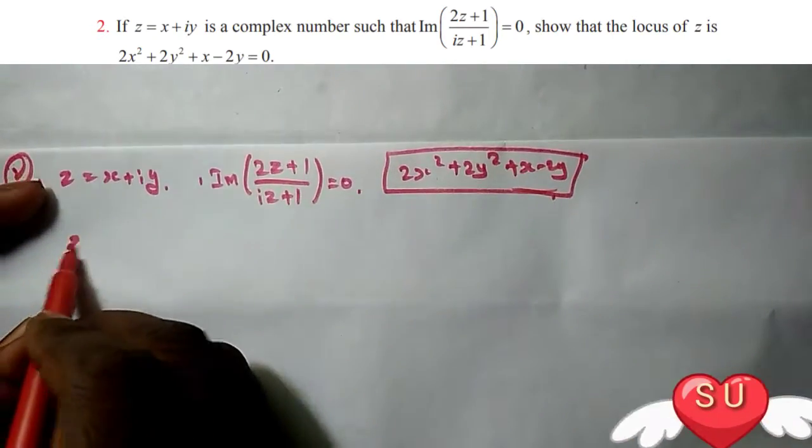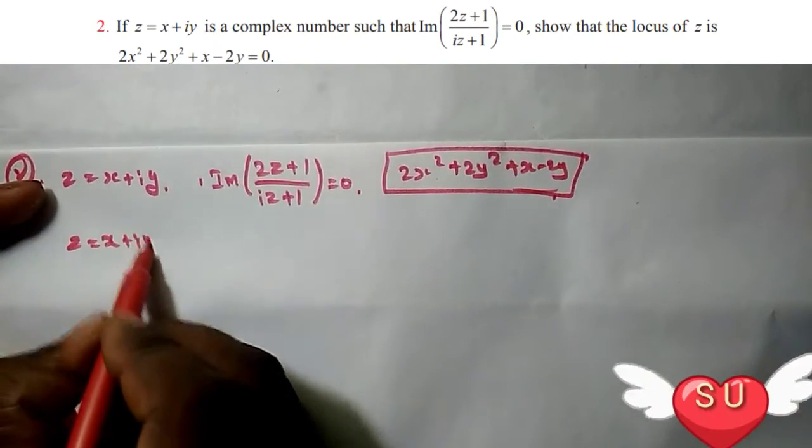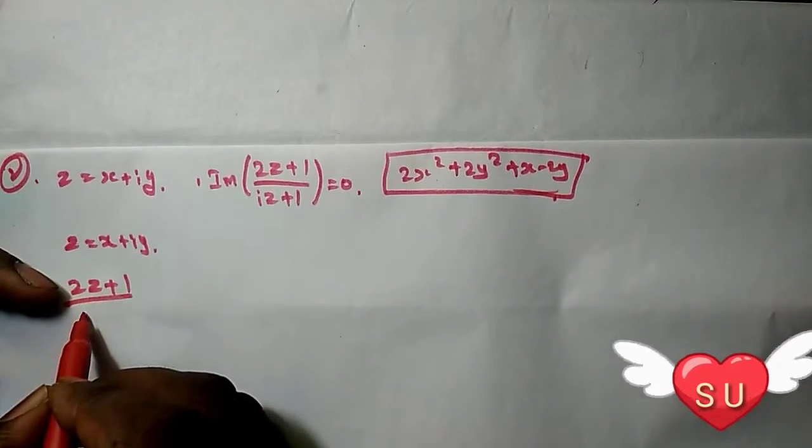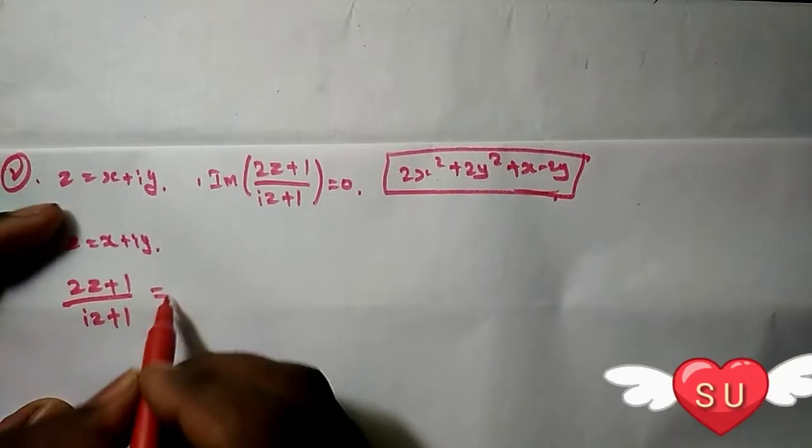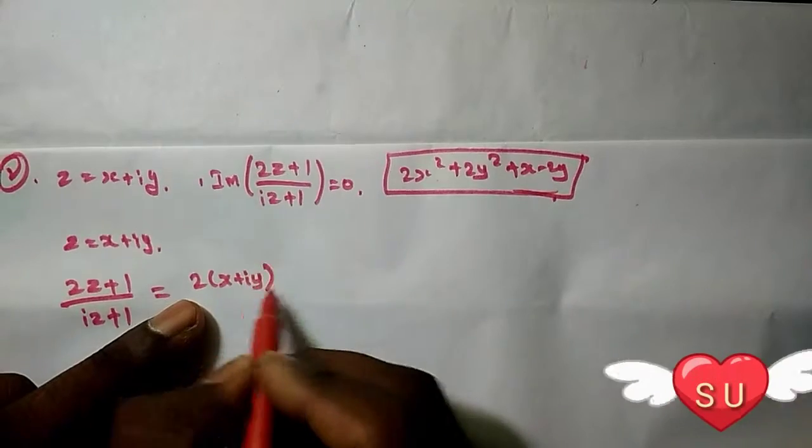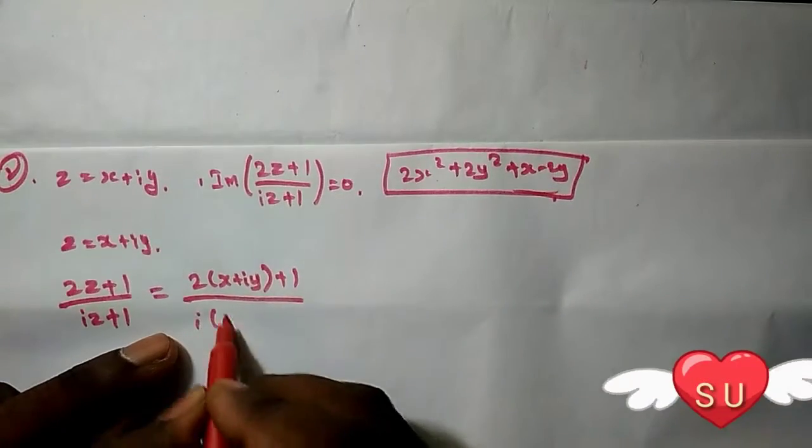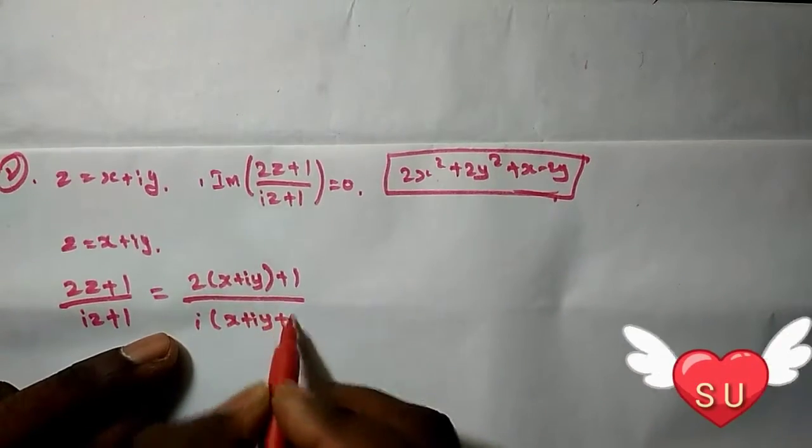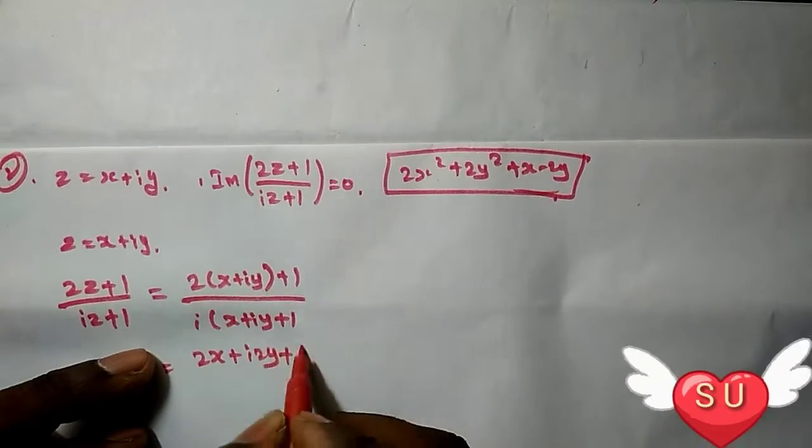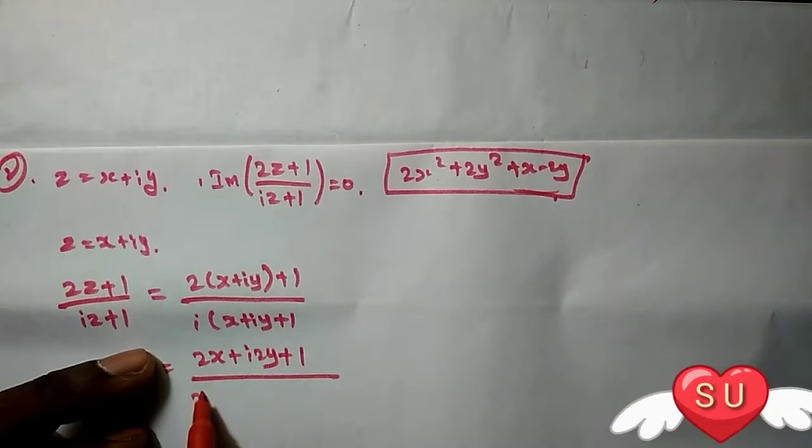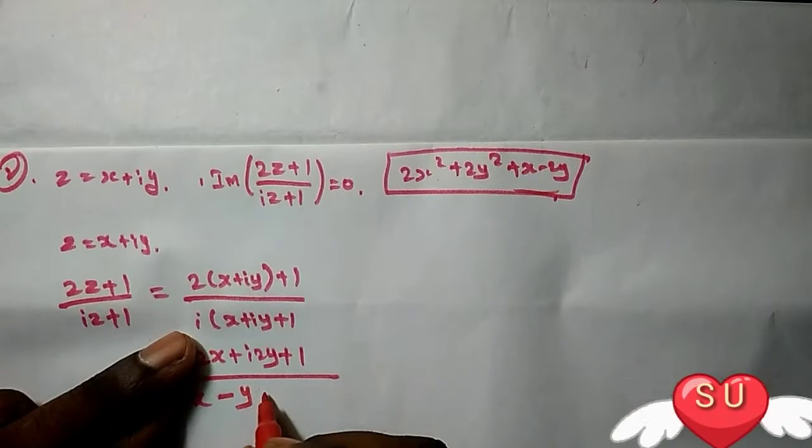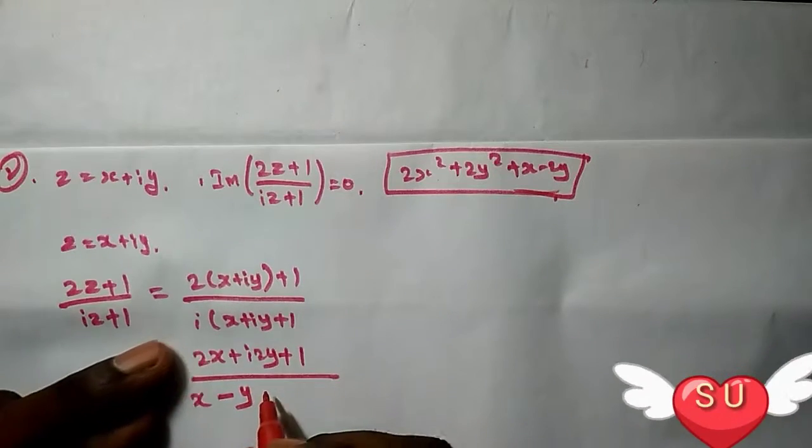First, let z = x + iy. We have (2z+1)/(iz+1). Substituting the value: 2(x+iy)+1 divided by i(x+iy)+1. Solving: (2x + i·2y + 1) divided by (ix + i²·y + 1). Since i² = -1, this becomes (2x + i·2y + 1)/(ix - y + 1).